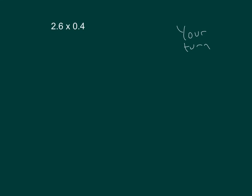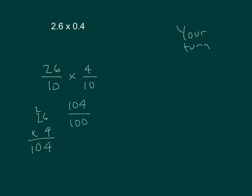It's your turn. Go ahead and solve this. Use fractions, and then also use unit form. 26 times 4: 4 times 2 is 8, plus 2 is 10. That's 104 hundredths, which equals 1.04.